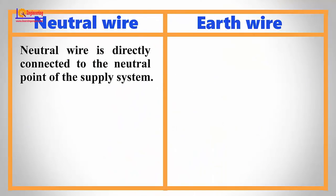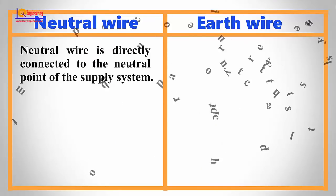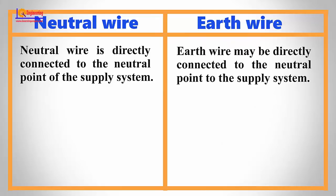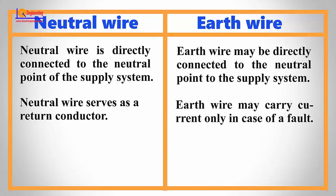Neutral wire is directly connected to the neutral point of the supply system. Earth wire may be directly connected to the neutral point to the supply system. Neutral wire serves as a return conductor. Earth wire may carry current only in case of a fault.